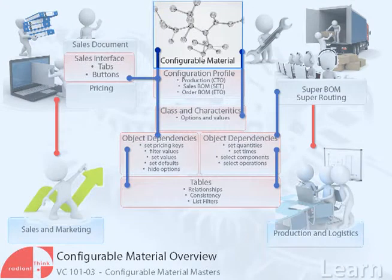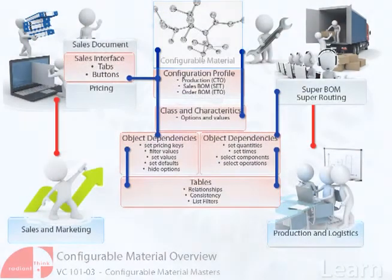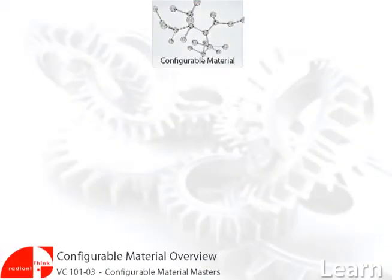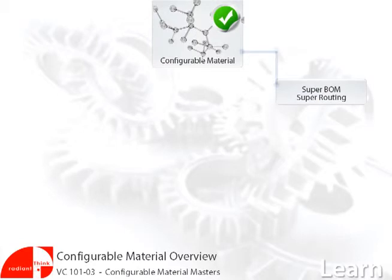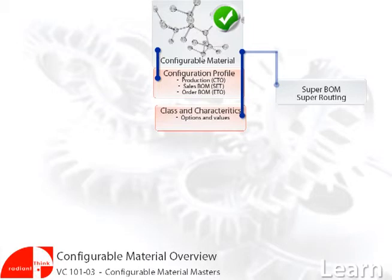In this lesson, we are defining the configurable material master. This is the central object of our modelling. Once the configurable material is created, we use it to define the super BOM, super routings, and the configuration profile. The variant class type 300 containing our options is assigned to the configurable material.